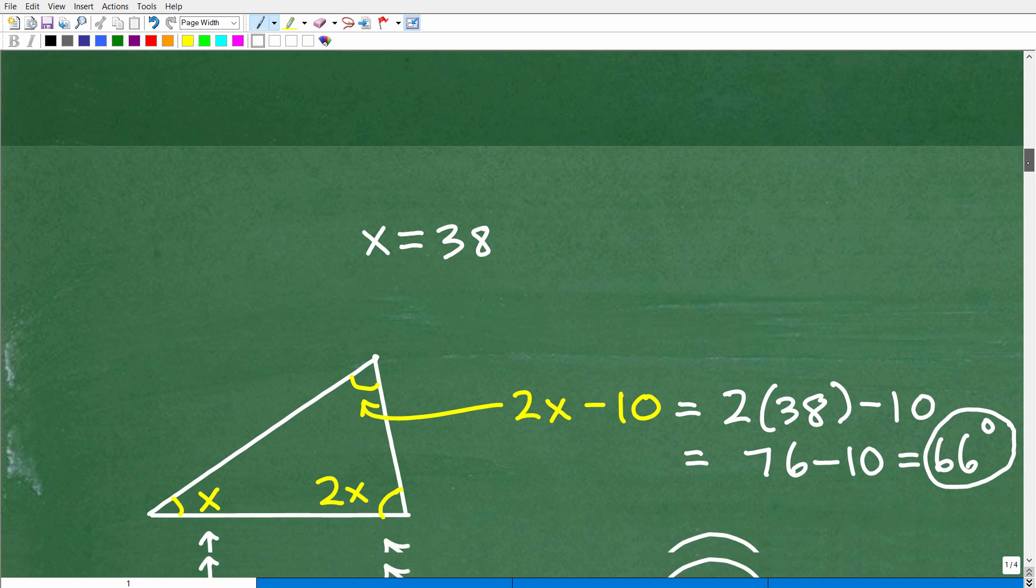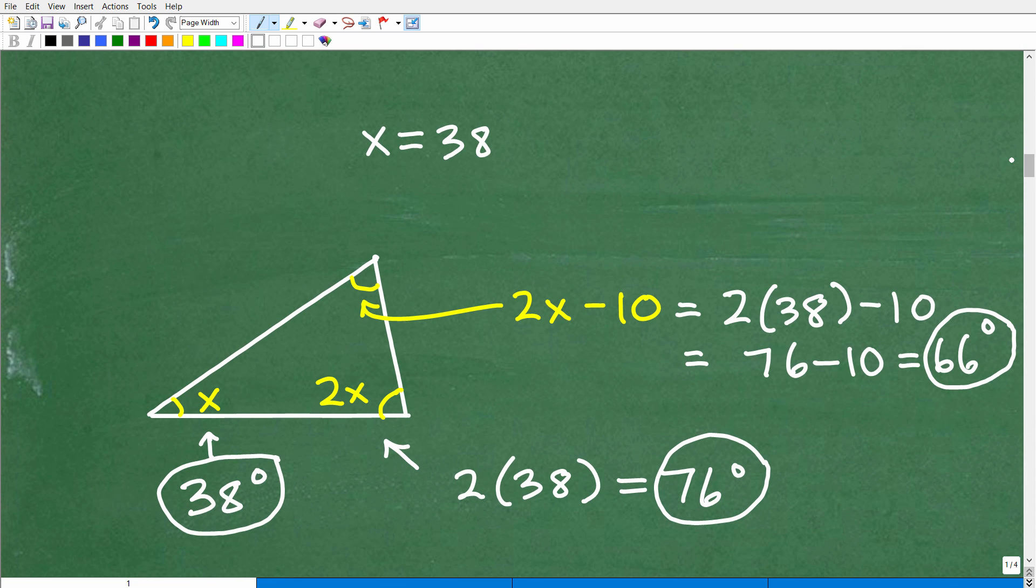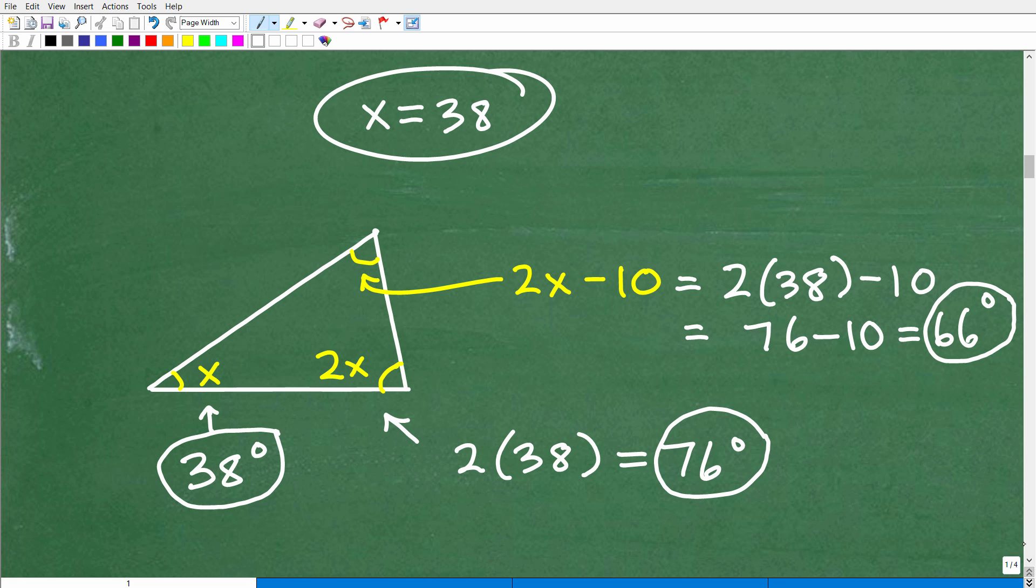So what we have to do is say, okay, x is now 38. So how do I get the angles? Well, here, here's our triangle. This is x. Okay. This angle is x. So, therefore, this angle is 38 degrees.